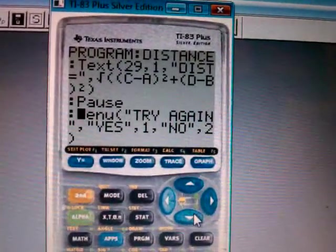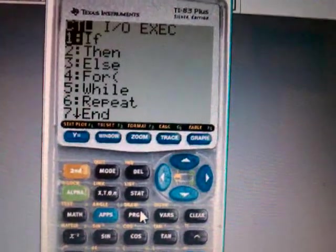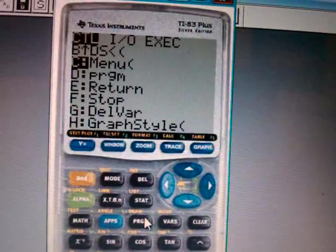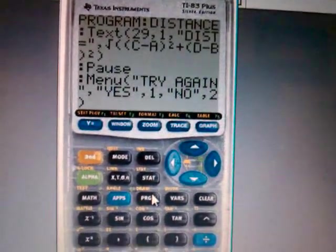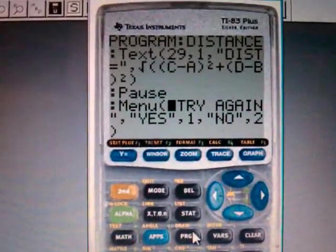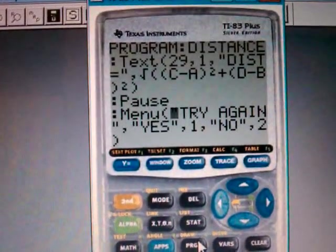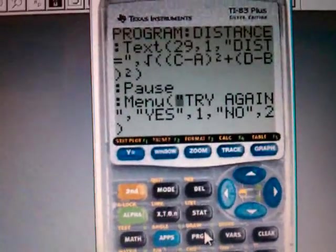Next thing you need is a Menu, which is also in Program. You can go up or down, it doesn't really matter. I usually go up, and there's my Menu. And I put in 'Try again'—you can put whatever code, whatever message you like. I usually put 'Try again,' and I have 'Yes,' you have to have that in quotation, comma, Yes, comma, 1, and then No, comma, 2.